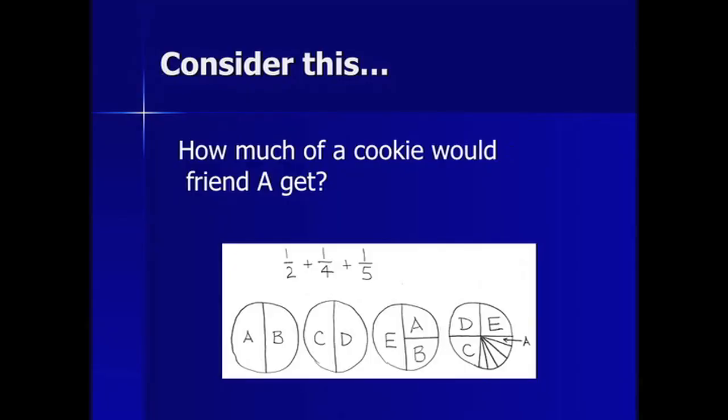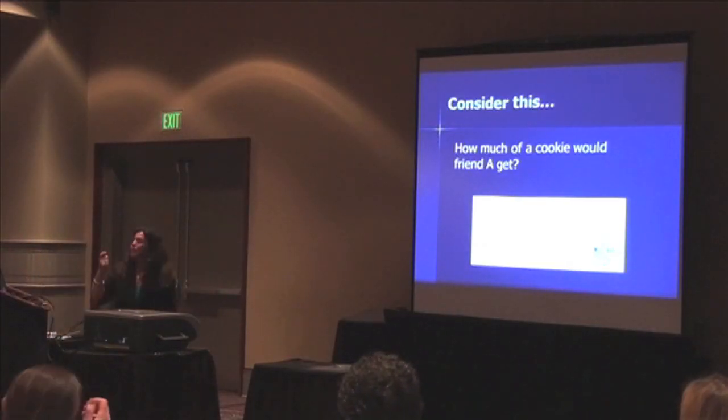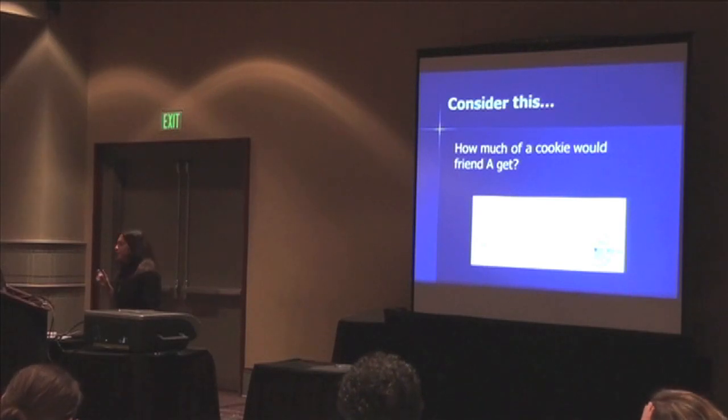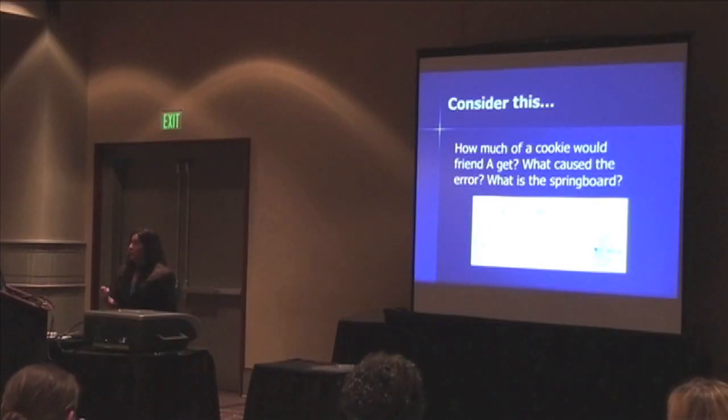I wrote it in a slide because I heard it — I'm using errors as springboards to learning. I'm coming up with just the right problem I knew you would get wrong. Not all of you, but enough of you that I could put them up in a slide. What was the error? We lost track of the whole. It should be a twentieth, because we had a fifth of a fourth. What did we need? A piece of the entire cookie, which is a twentieth.